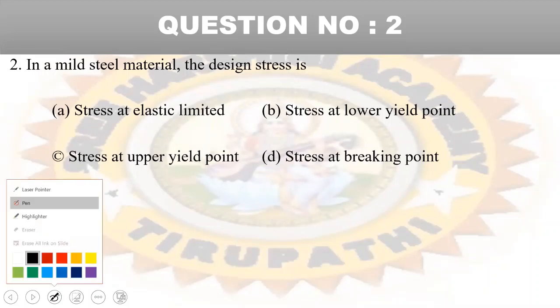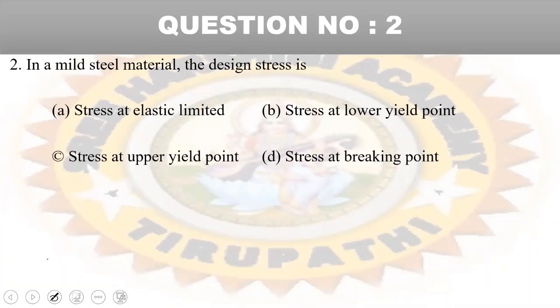Second question: in a mild steel material, the design stress is which of the following — elastic limit stress, stress at lower yield point, stress at upper yield point, or stress at breaking point? The upper yield point is unreliable due to the shape of specimen and rate of loading, hence stress at lower yield point is considered as the design stress.